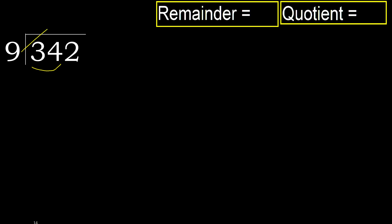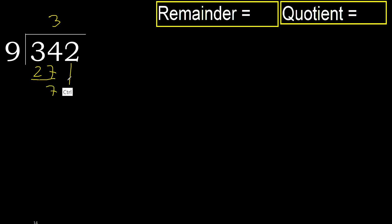9 multiplied by which number is nearest to 34 but not greater? 9 multiplied by 4 is 36, which is greater. 9 multiplied by 3 is 27, which is not greater. Subtract, then next.